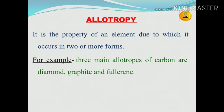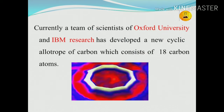For example, three main allotropes of carbon are diamond, graphite, and fullerene. Currently, a team of scientists from Oxford University and IBM Research has developed a new cyclic allotrope of carbon which consists of 18 carbon atoms.